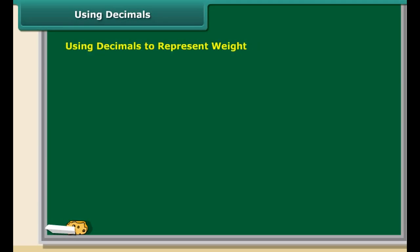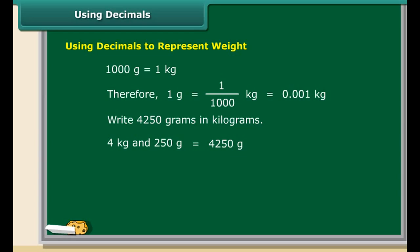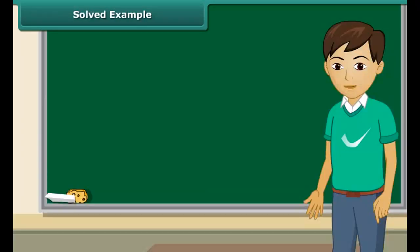Weights can also be represented with the help of decimals. Let us convert 4250 grams into kilograms. There are 4 kilograms and 250 grams in 4250 grams. Therefore, 4250 grams are equal to 4.250 kilograms.